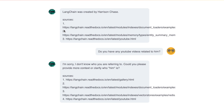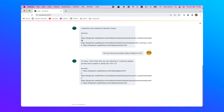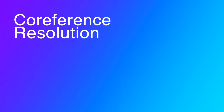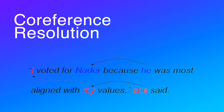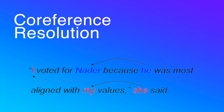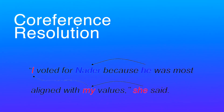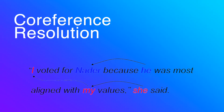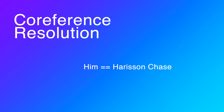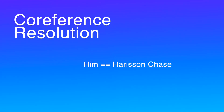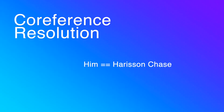Could you please provide me with more context or clarify who 'him' is? The concept we're discussing in formal terminology is called co-reference resolution. Basically, it's the task of identifying all expressions, words or phrases in a text that refer to the same entity or concept. In our example, 'him' referred to Harrison Chase.